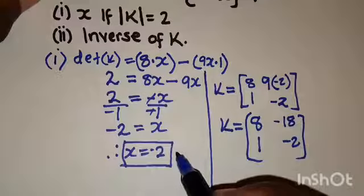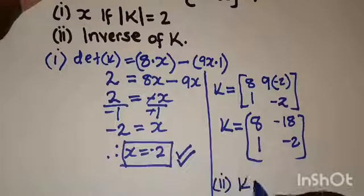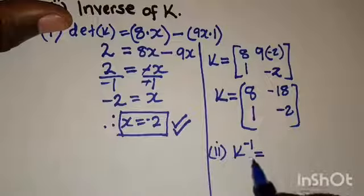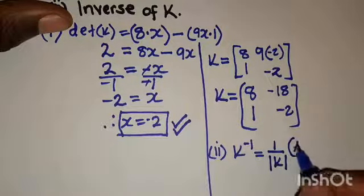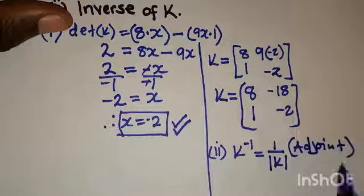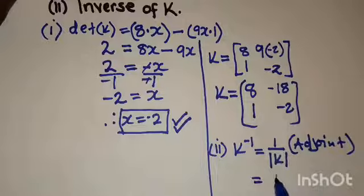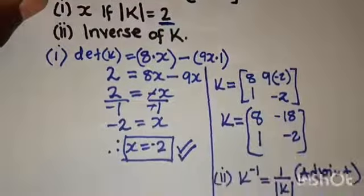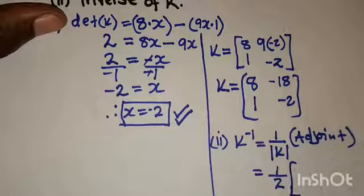Our interest was to find the value of X. Now for Part 2, we want to find the inverse of matrix K. The inverse of matrix K is given by 1 over the determinant of K, times the adjoint of matrix K. The determinant of K was given as 2, so we put 2 here.